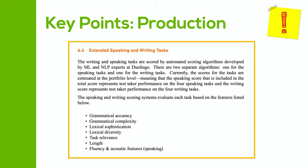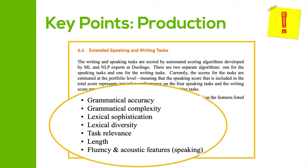On the Duolingo English test website, you can find information showing what the criteria is for the extended speaking and writing tasks, which all contribute towards your production score. The production questions are marked based on these elements: grammatical accuracy, grammatical complexity, lexical sophistication, lexical diversity, task relevance, length, fluency, and acoustic features. Lexical basically means vocabulary, and acoustic features means pronunciation. That is how the Duolingo English test production score is evaluated — based on those seven key points.